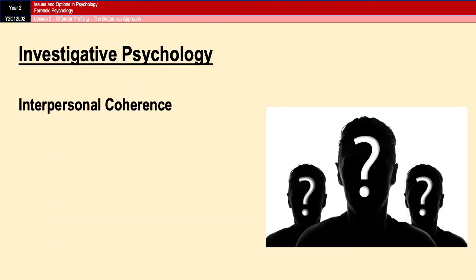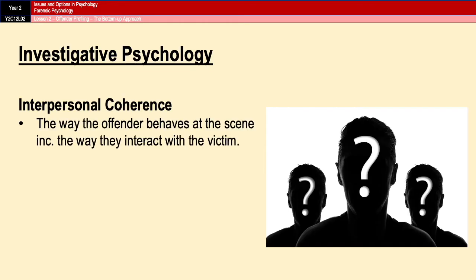Interpersonal coherence refers to the way an offender behaves at the scene of the crime, including the way they interact with the victim, because that might reflect their behavior in everyday situations. For example, Dwyer in 2001 suggested that some rapists want to maintain maximum control and humiliate their victims, whereas other rapists are more apologetic for their actions. That could tell the police something about how the offender relates to women more generally in everyday life.